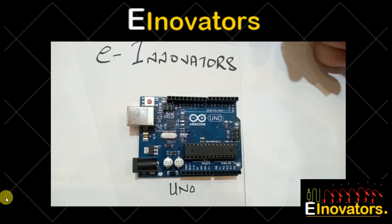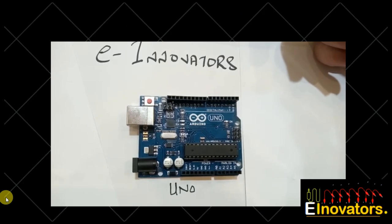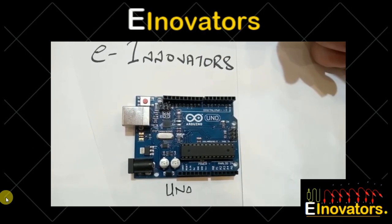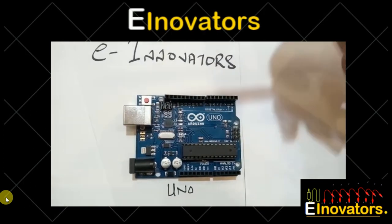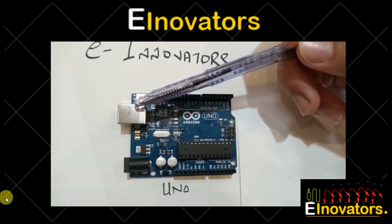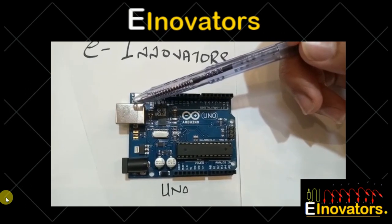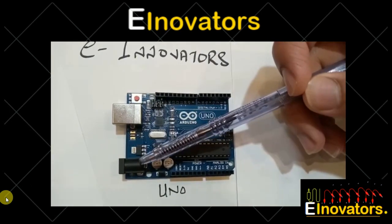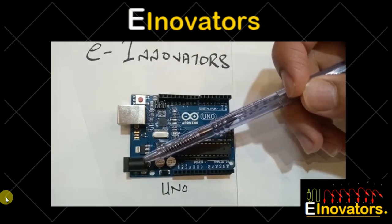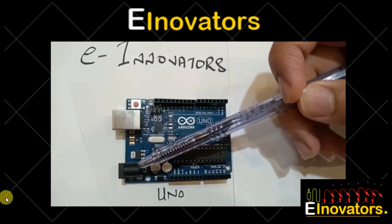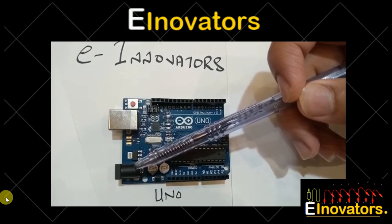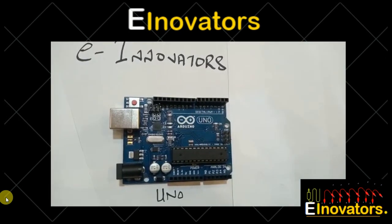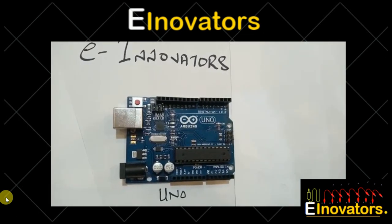Now let's discuss Arduino UNO. On the top right is the USB jack, used to flash the program into the Arduino. On the top left is the DC jack; with the help of this you can power up your Arduino. Be careful — you can give the voltage around 17 to 18 volts. Voltage above this can help the Arduino.